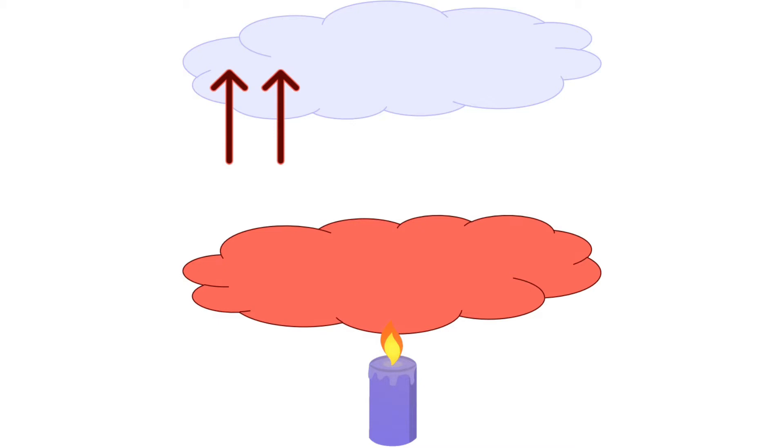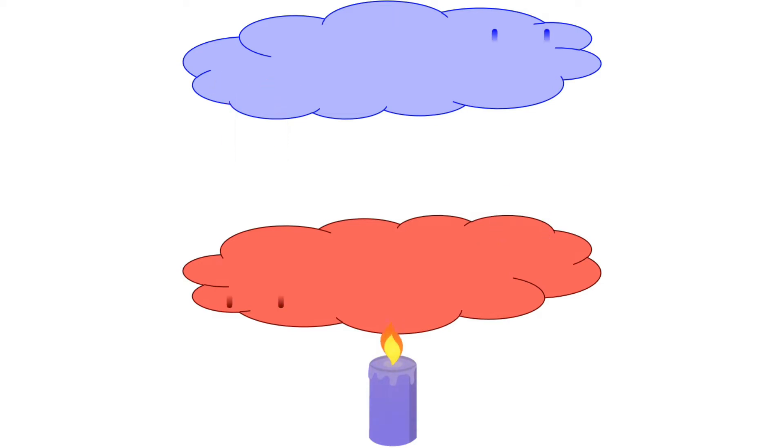and the cold air, which is heavier, sinks down. This cold air sinks down to the candle and the warm air around the candle. So what happens is this cold air is then warmed back up by the candle, and then rises again,